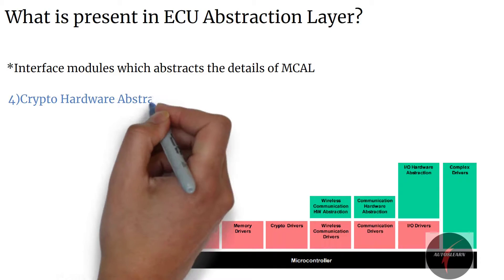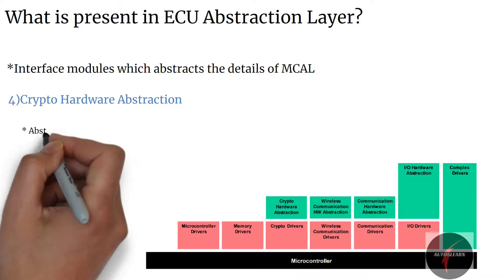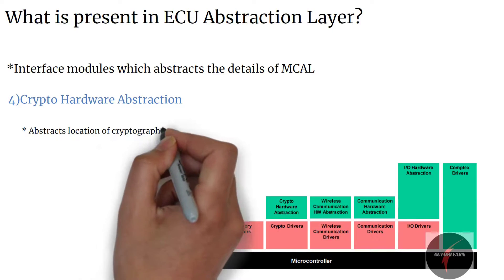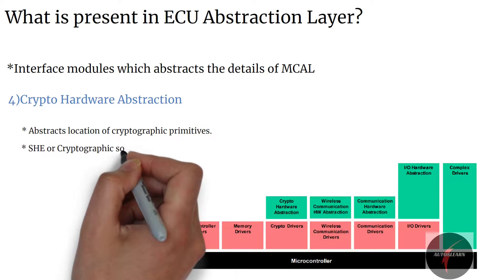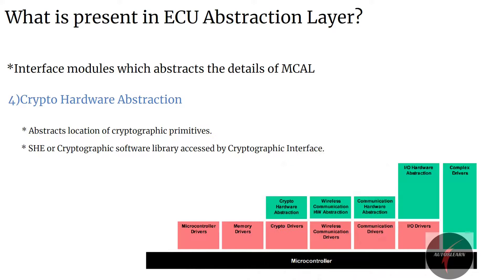Crypto hardware abstraction is a group of modules which abstracts the upper layer from the location of cryptographic primitives, either internal or external hardware or even software-based. For example, the AES primitive is realized in hardware or provided as part of a software library, which is accessed through APIs provided by the cryptographic interface.